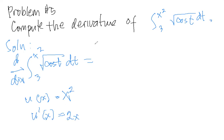So in this case, using the first fundamental theorem of calculus, we have the square root of cosine of u of x times the derivative of u of x.